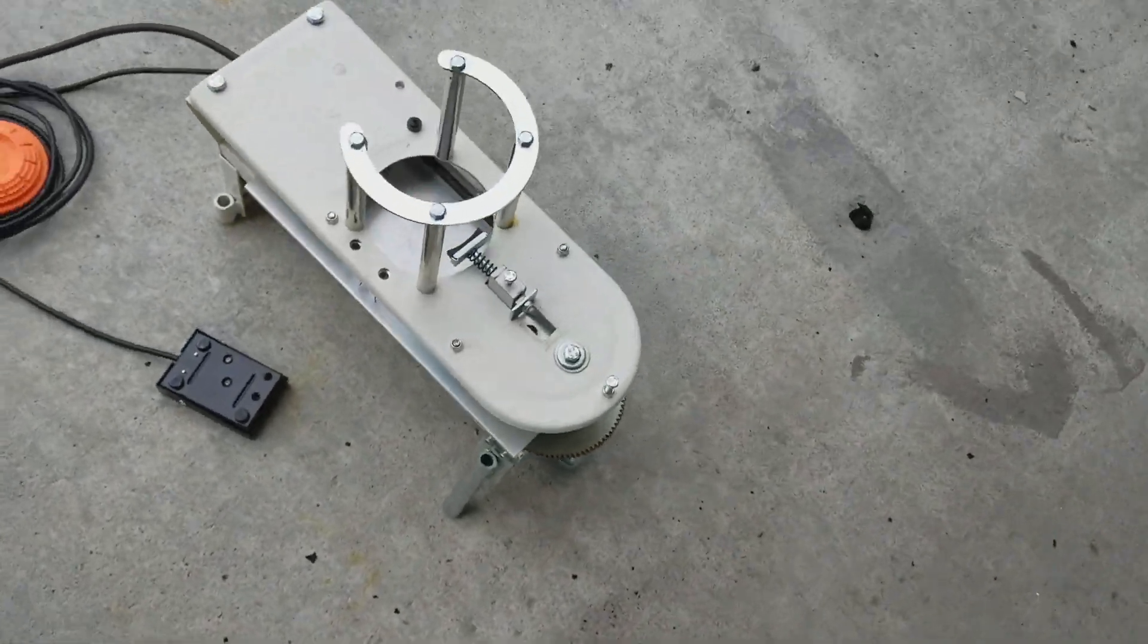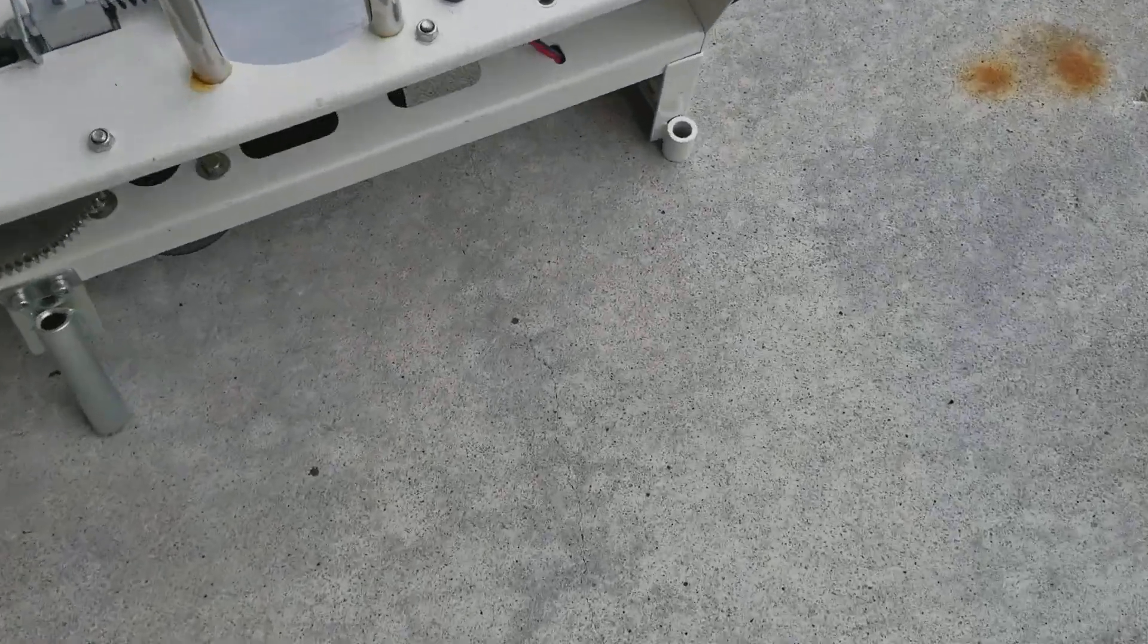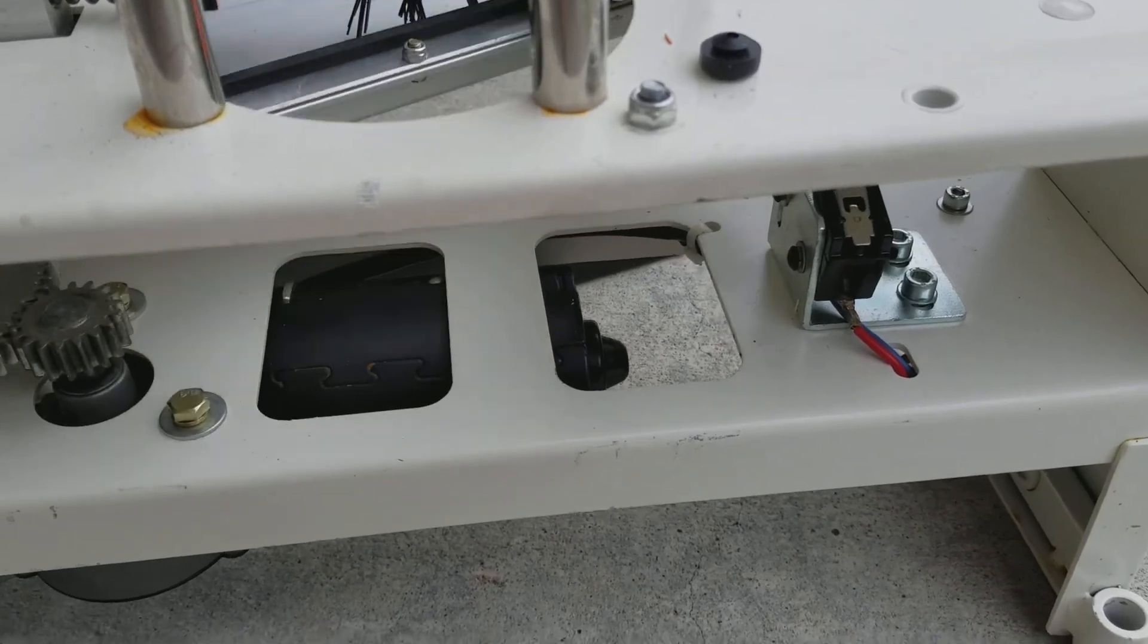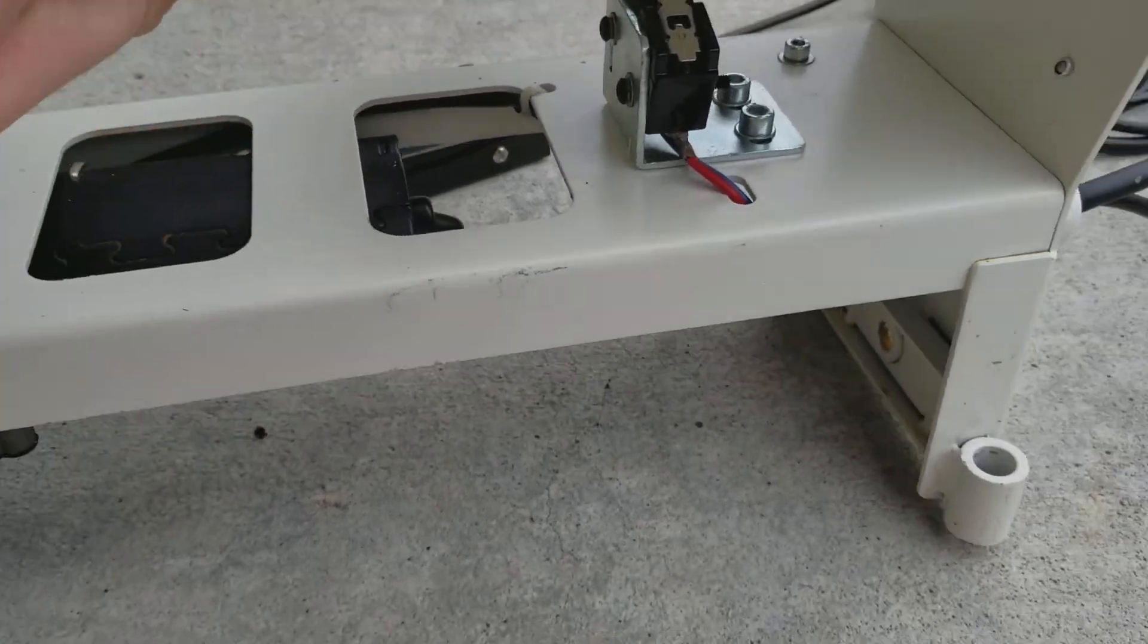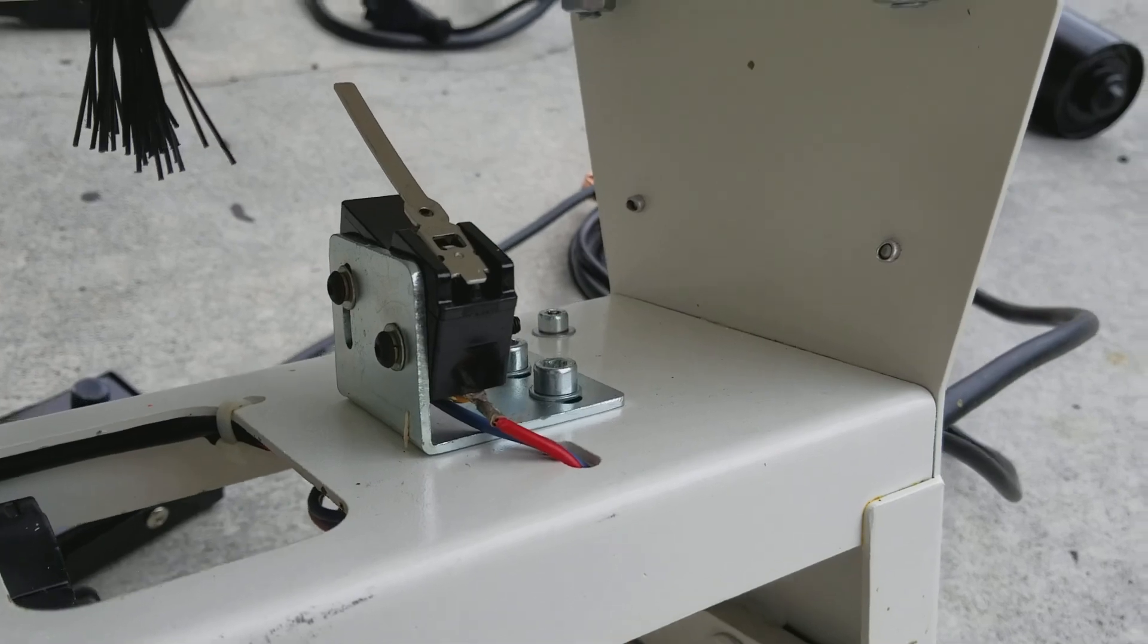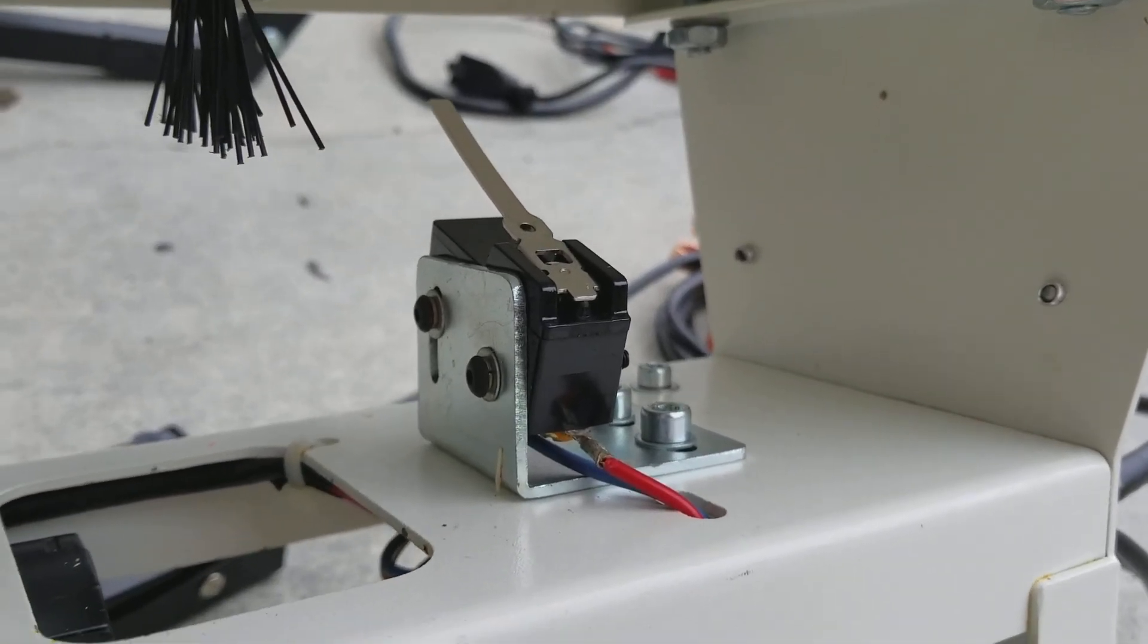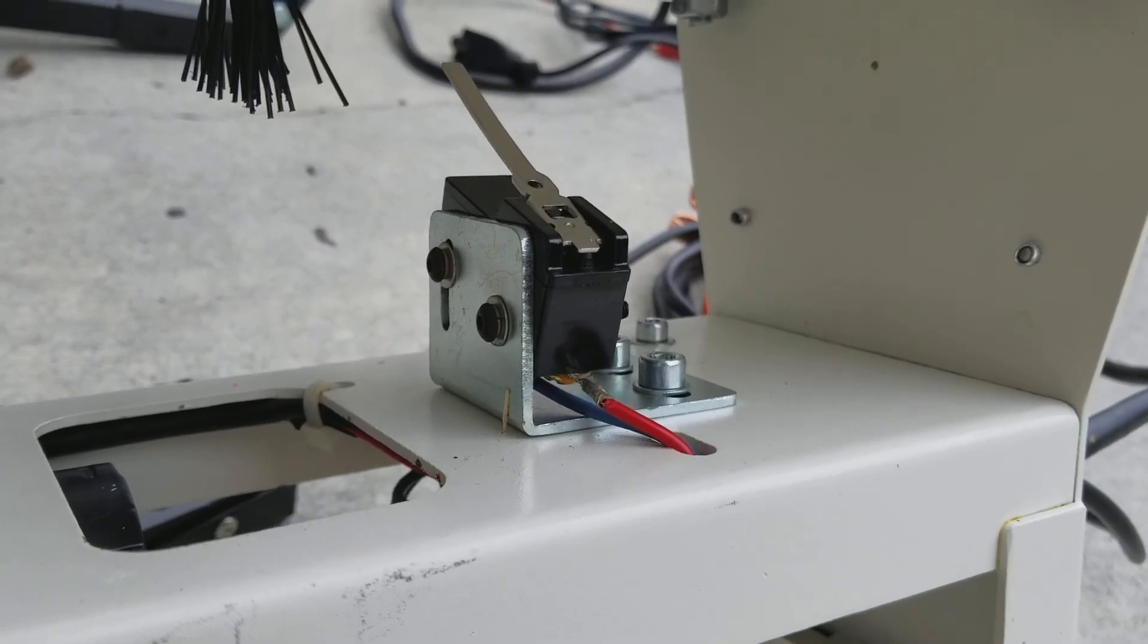And finally, our third version here of the limit switch on the Firefly and the most secure position for it is this. And when that arm comes around, it bends down that tiny little metal arm you see on the micro switch and it tells the motor to stop running.